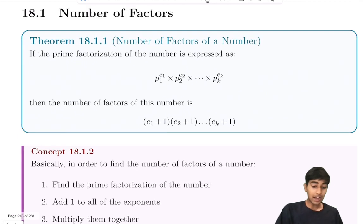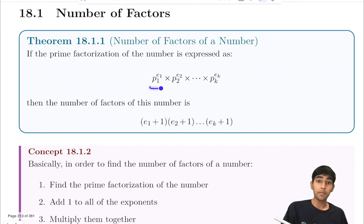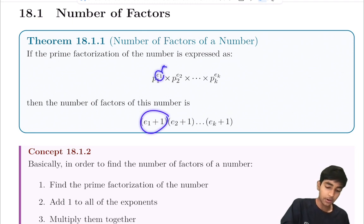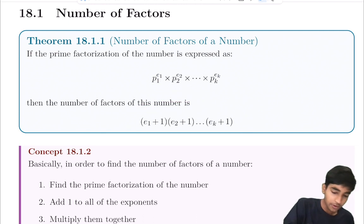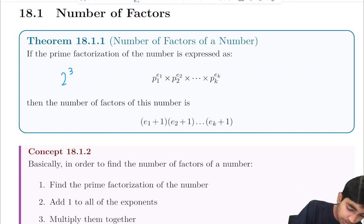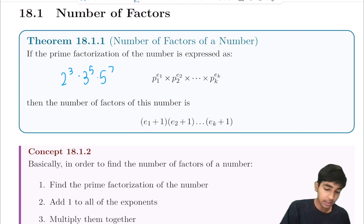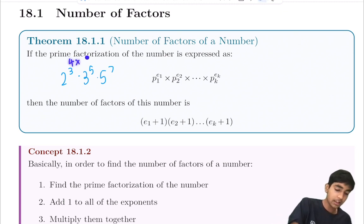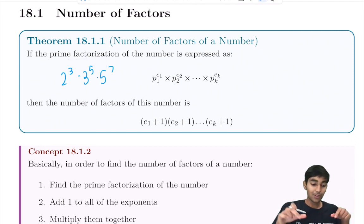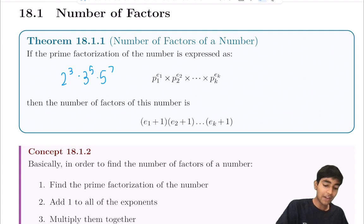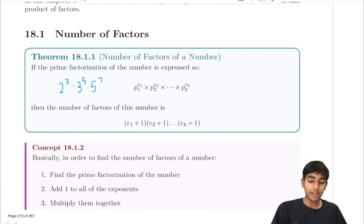The number of factors of a number with a given prime factorization is found by simply adding 1 to all the exponents and multiplying that product together. It's that simple. For example, if you have 2 cubed times 3 to the 5th times 5 to the 7th, the number of factors is just (3+1) times (5+1) times (7+1) = 4 times 6 times 8. That's a really neat trick.